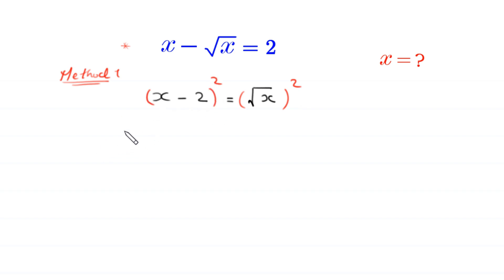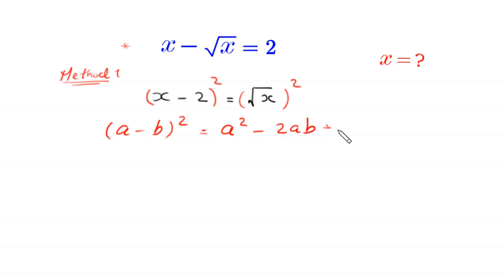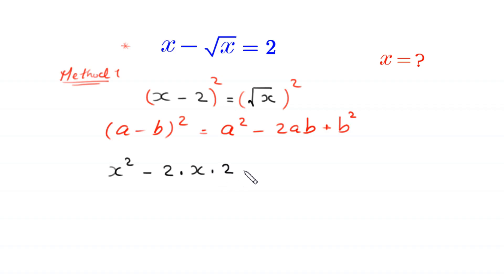By using the algebraic identity, a minus b whole squared is equal to a squared minus 2ab plus b squared, this x minus 2 whole squared will become x squared minus 2 times x times 2 plus 2 squared is equal to x, since the square cancels with the square root on the right hand side.